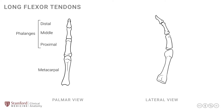The first tendon is the flexor digitorum superficialis, seen here in orange. This is the FDS, or flexor digitorum superficialis, and as it crosses the metacarpophalangeal joint, somewhere over the proximal phalanx area, it splits into two. Those two slips cross the proximal interphalangeal joint and attach onto the middle phalanx. This is the classic arrangement of the FDS tendon in each of the four fingers.